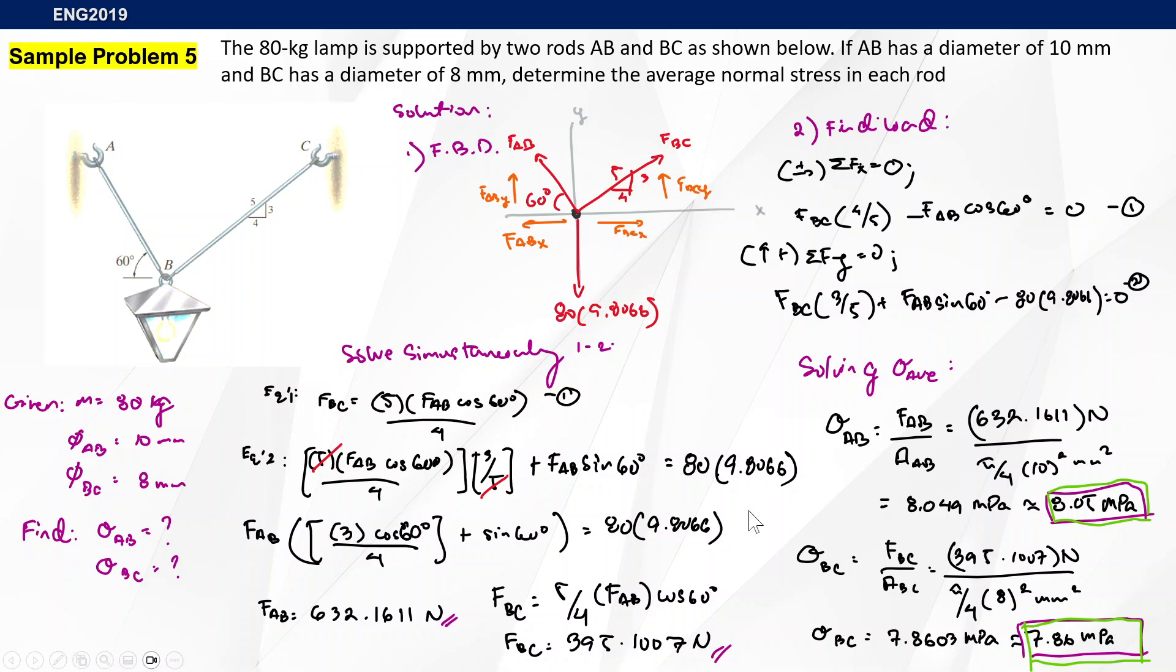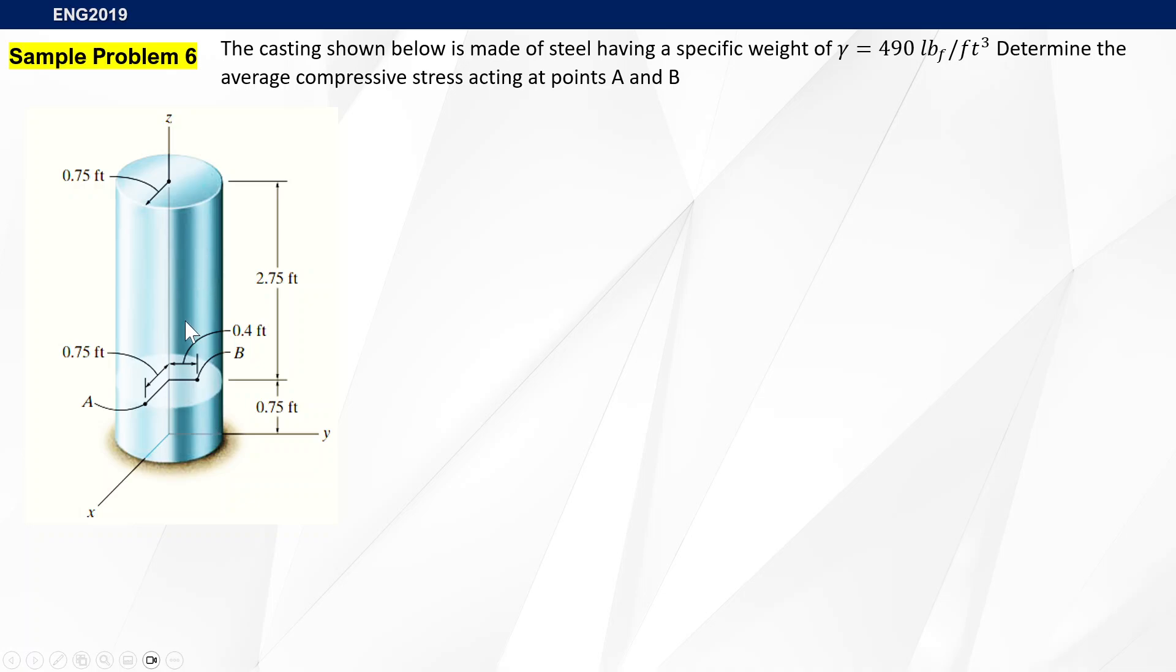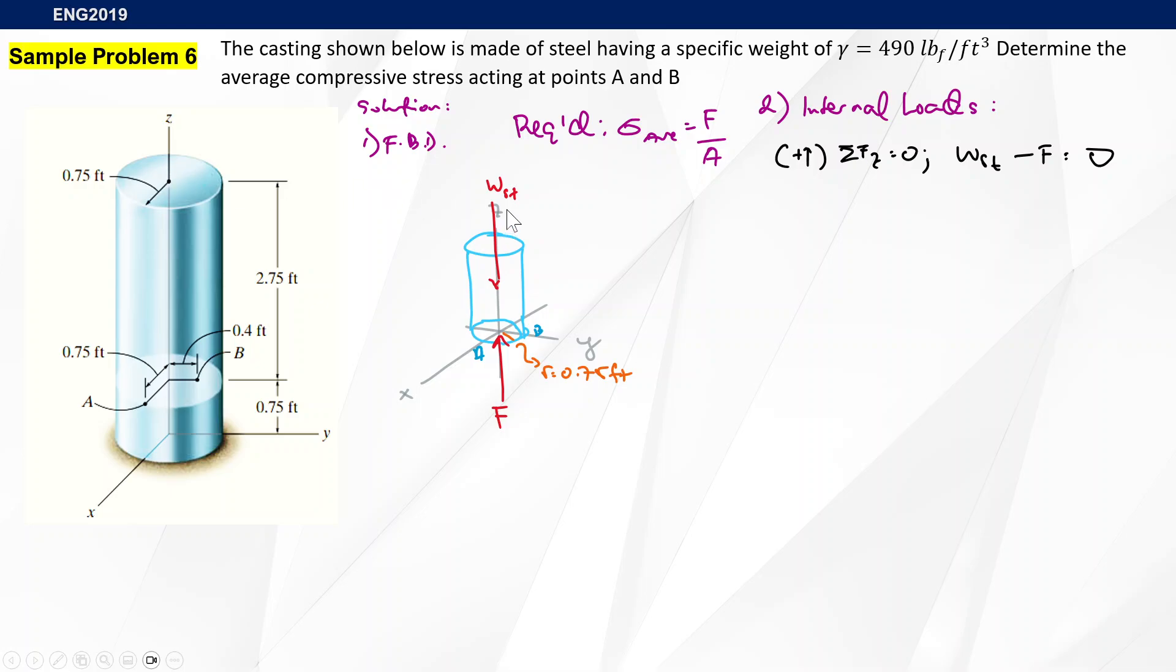Another sample problem for our average normal stress. Here's a compression type. The casting shown is made of steel which has a specific weight of 490 pound force per cubic foot. Determine the average compressive stress acting at point A and B. Technically it's only this one, so we ignore the bottom half. We're going to draw the FBD, so something is going to look like this. There's the applied load here, force F, and of course the weight of the steel itself. We have the ranges here at 0.75 feet. Next step, we need to find the internal loads first.